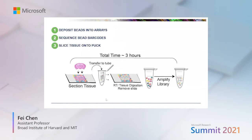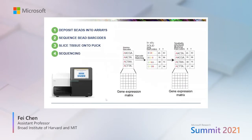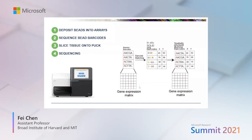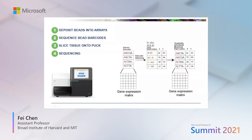When you sequence the libraries, you get data very much like single-cell libraries — for each bead barcode, you get a vector of counts across each gene in the transcriptome. Across all barcodes, you have a matrix with bead barcodes on one side and genes on the other. Since we have the spatial location of each bead, we can match them up, giving each read an XY location.